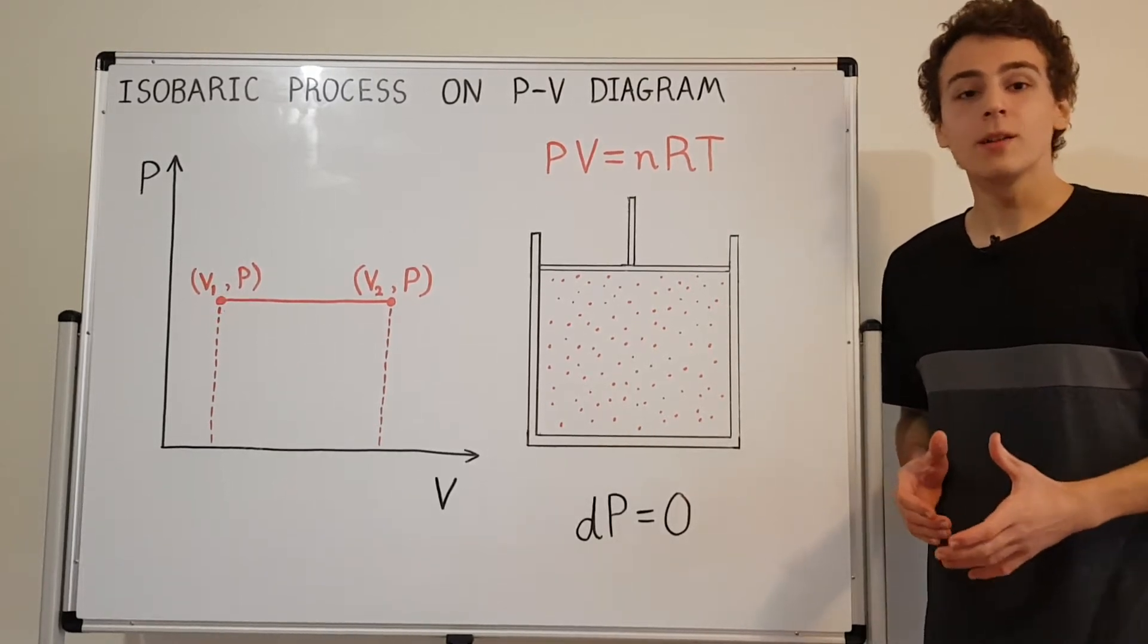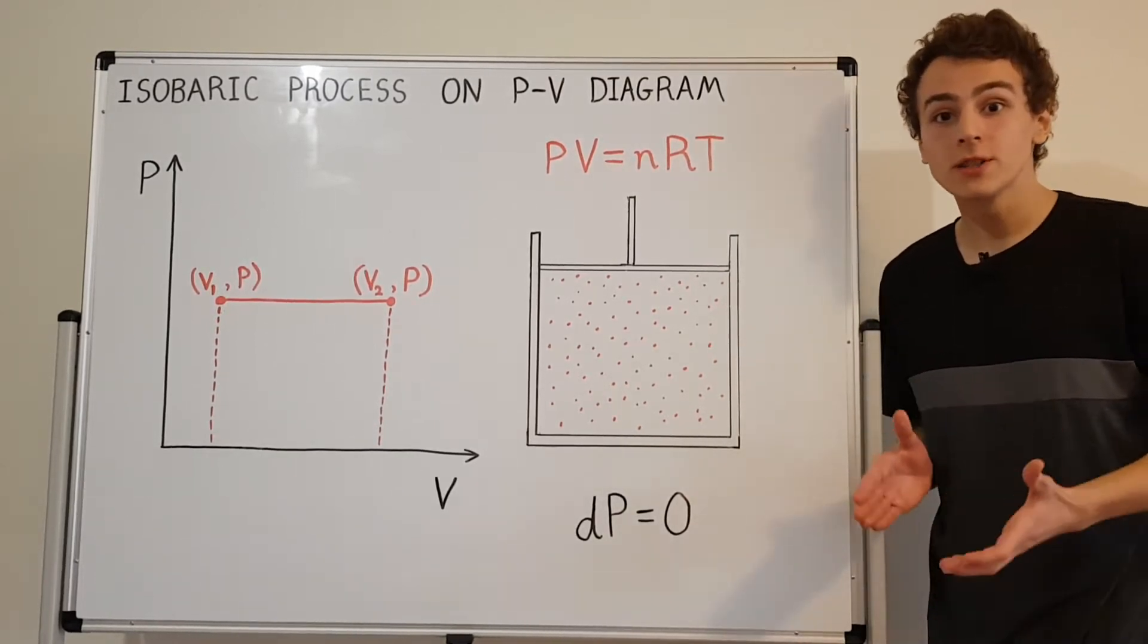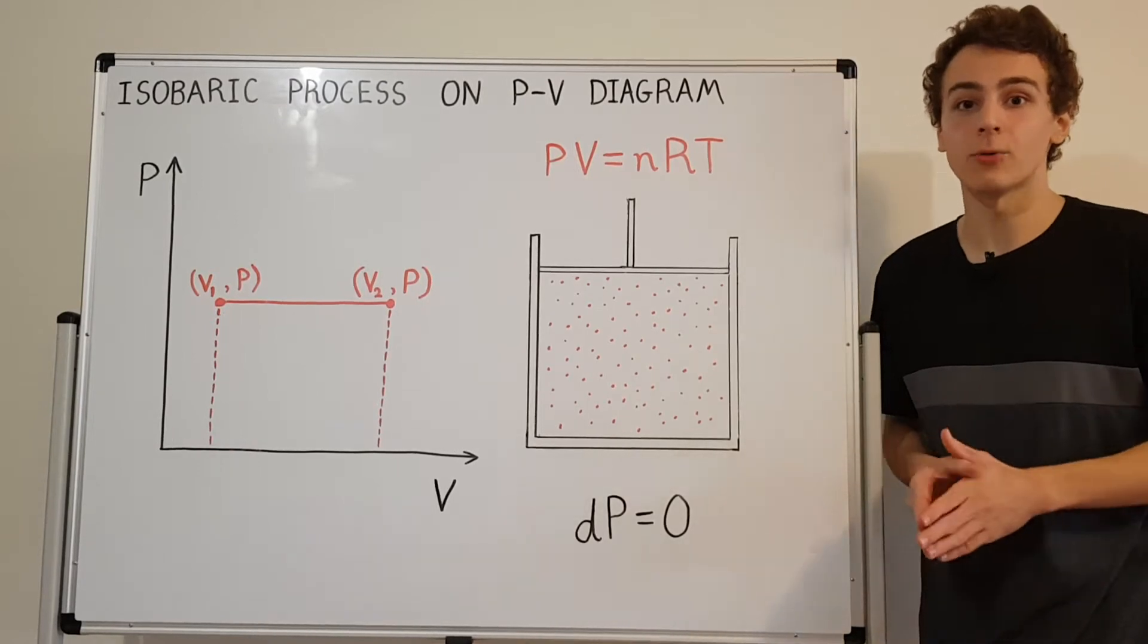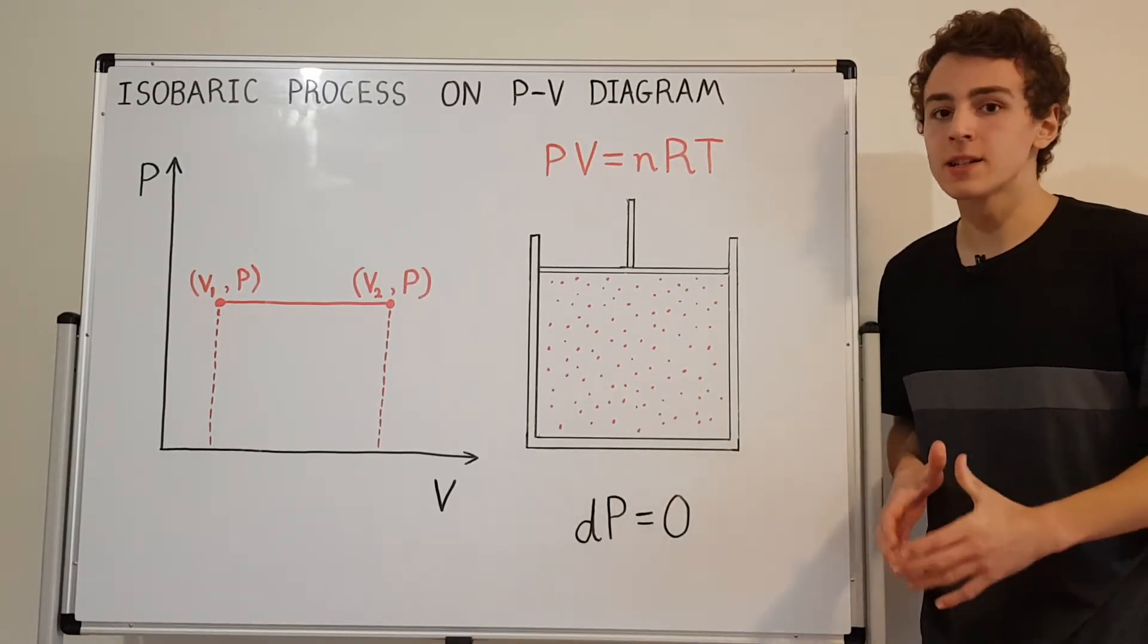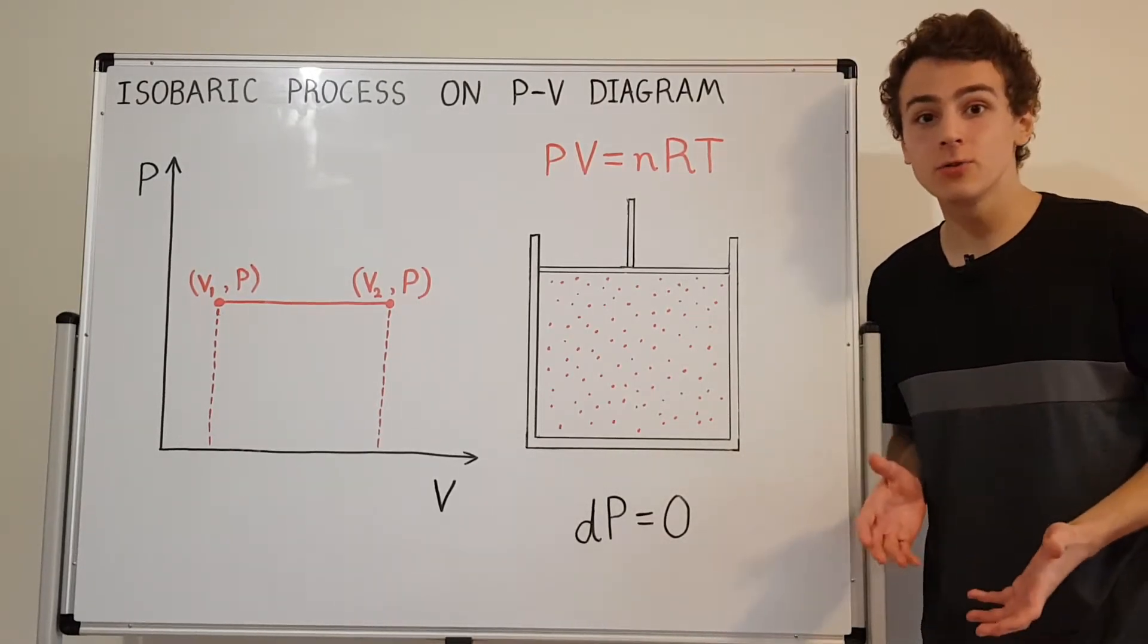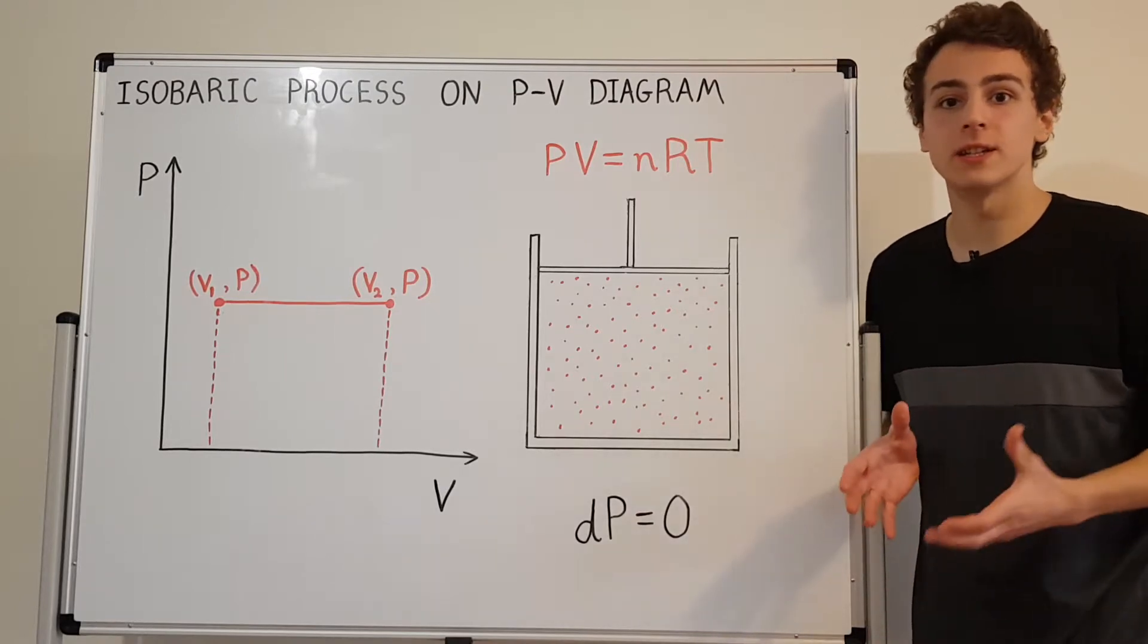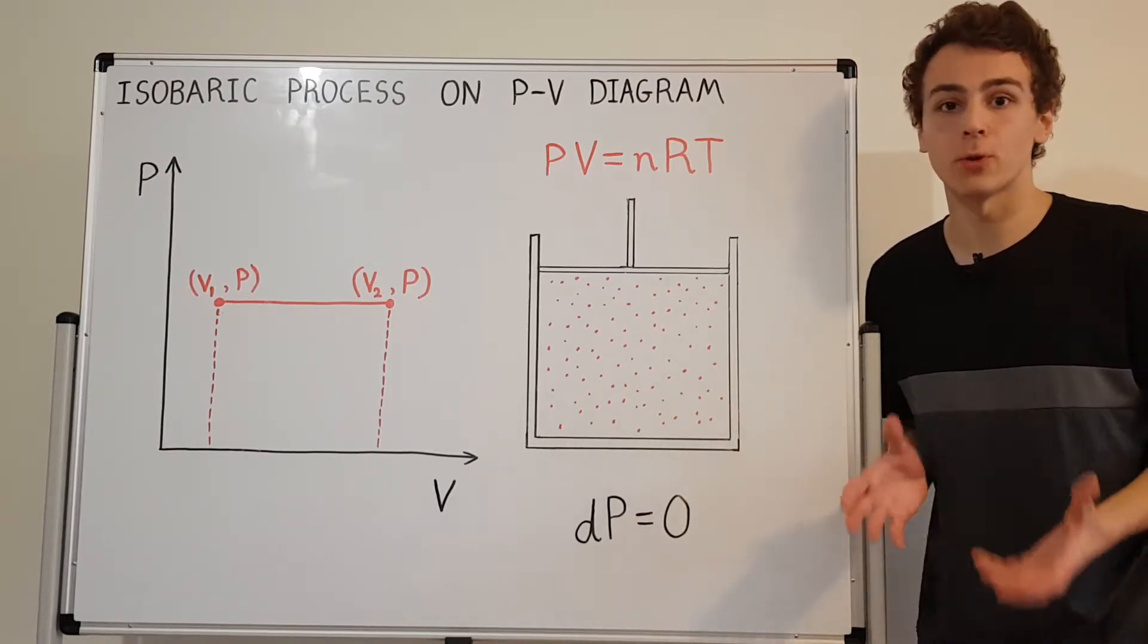In this video I'm going to be representing isobaric processes on the PV diagram. In thermodynamics, the PV diagram is commonly used to provide a visual representation of some kind of physical process.